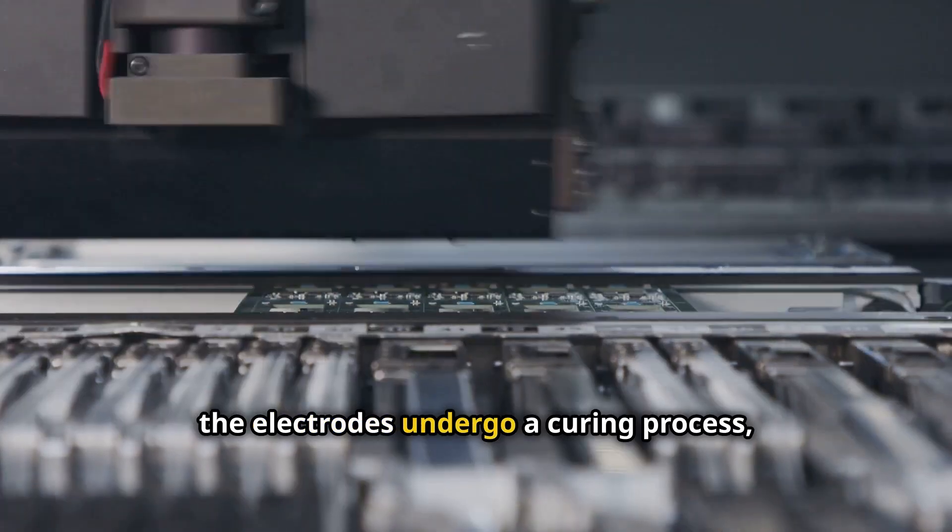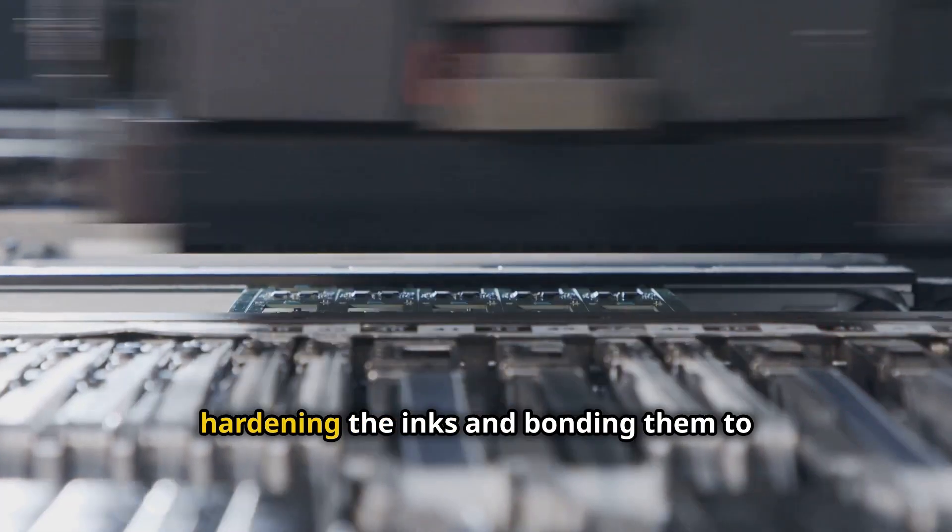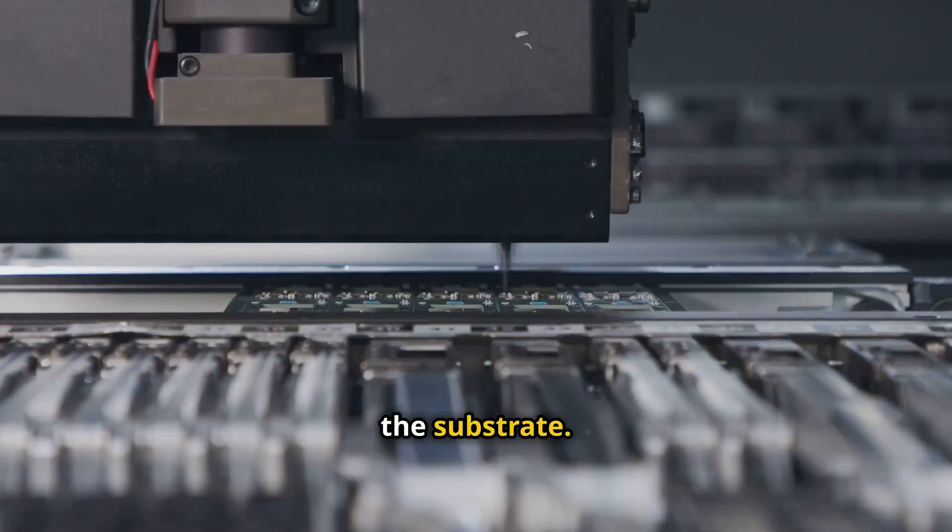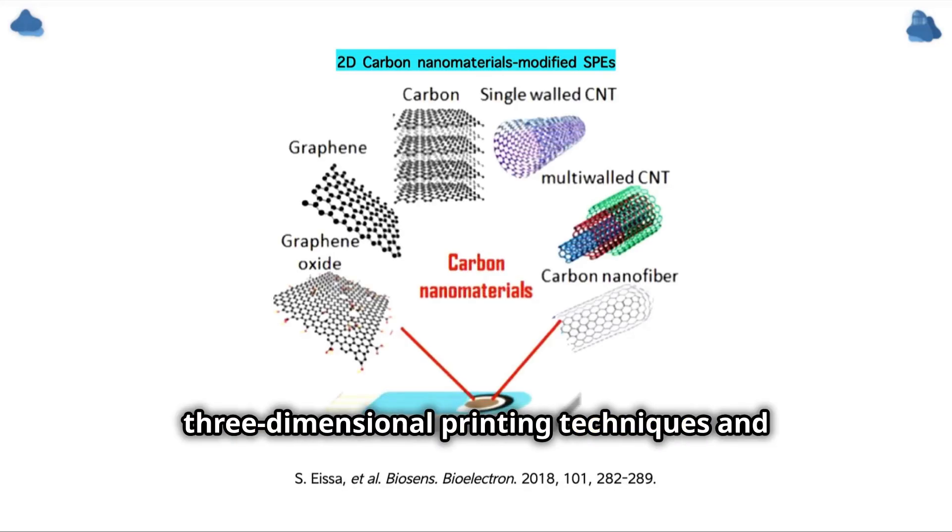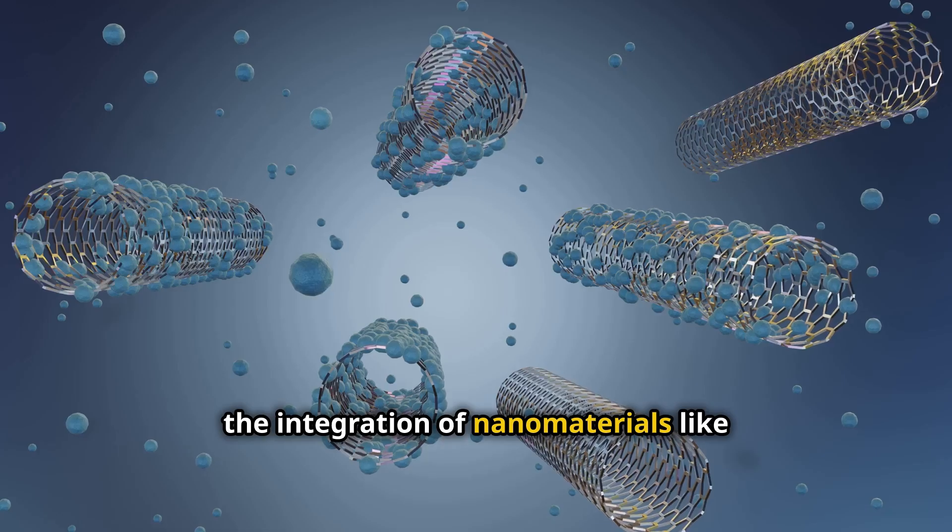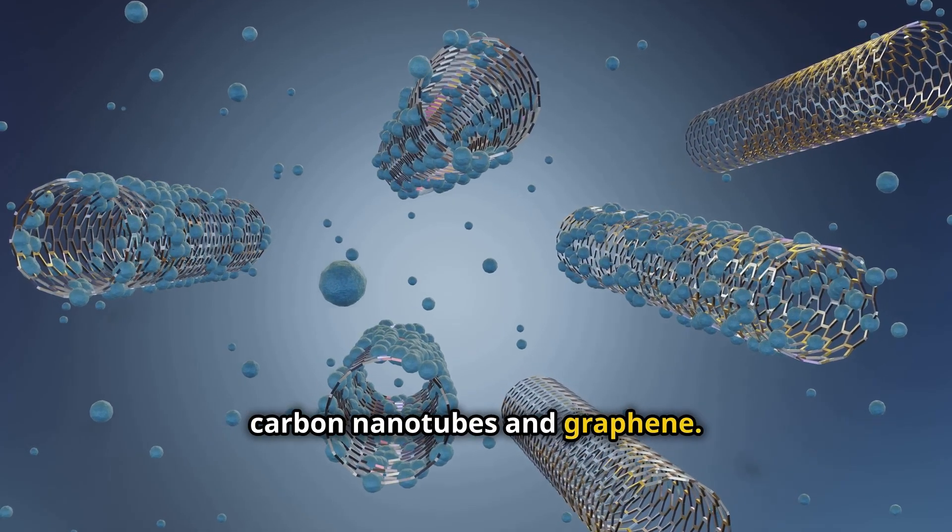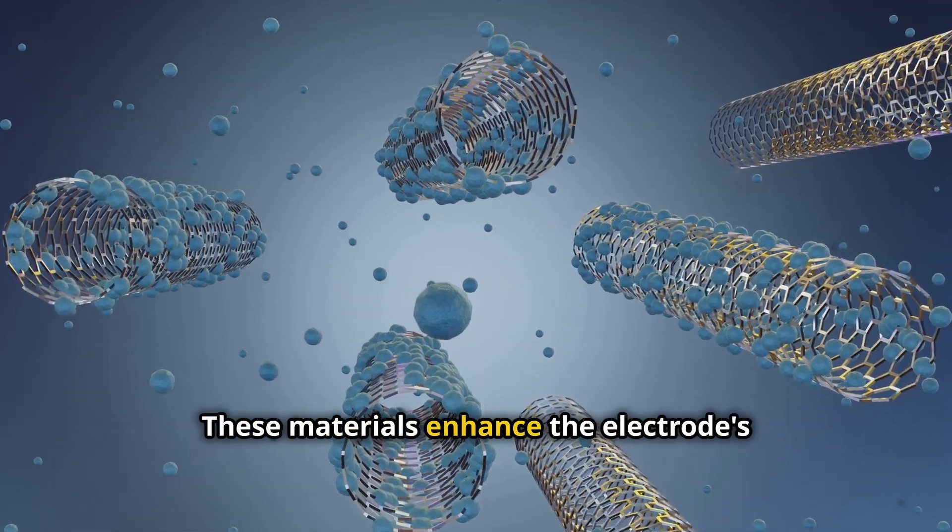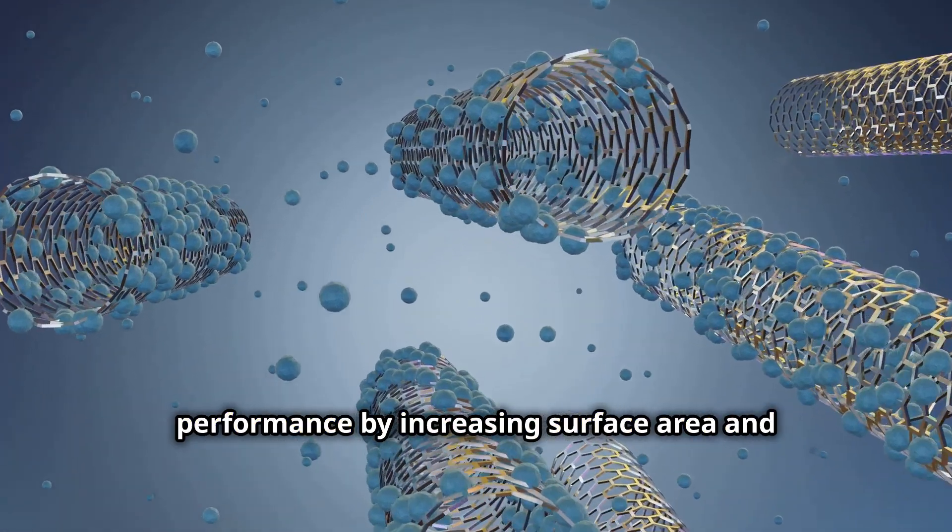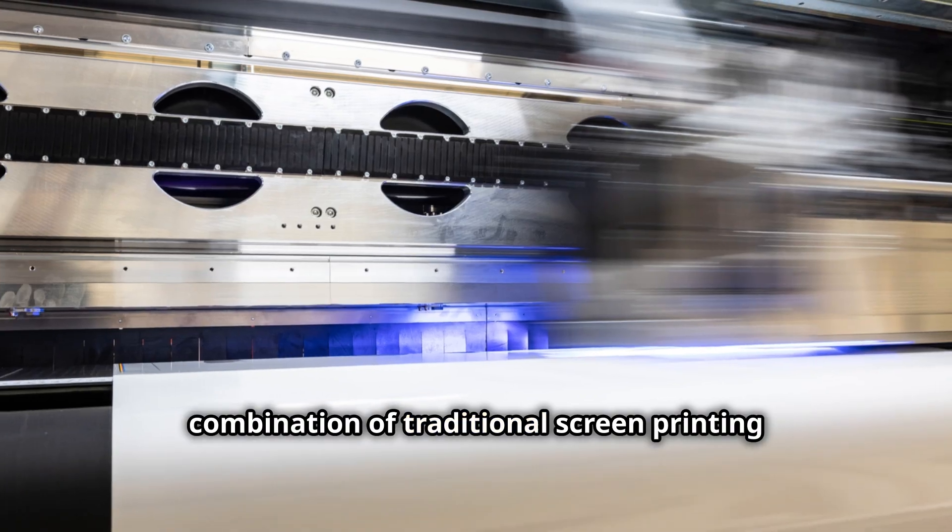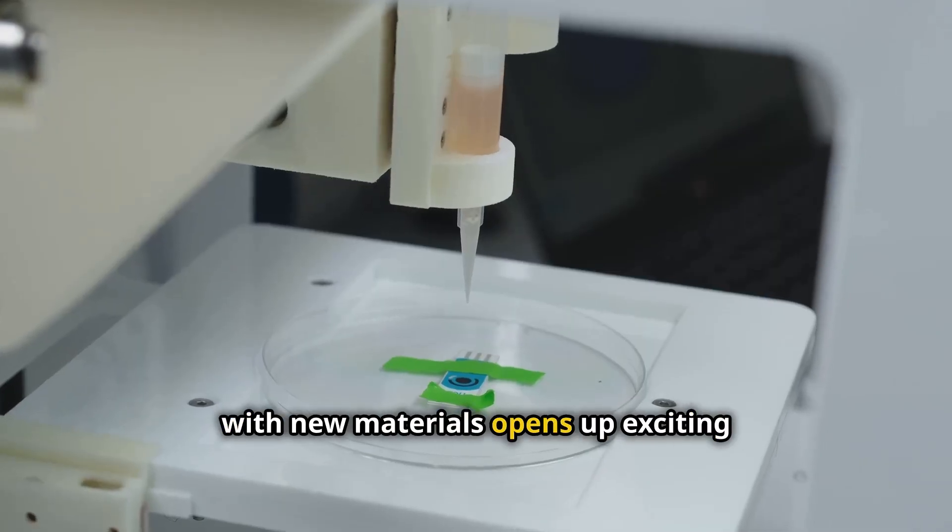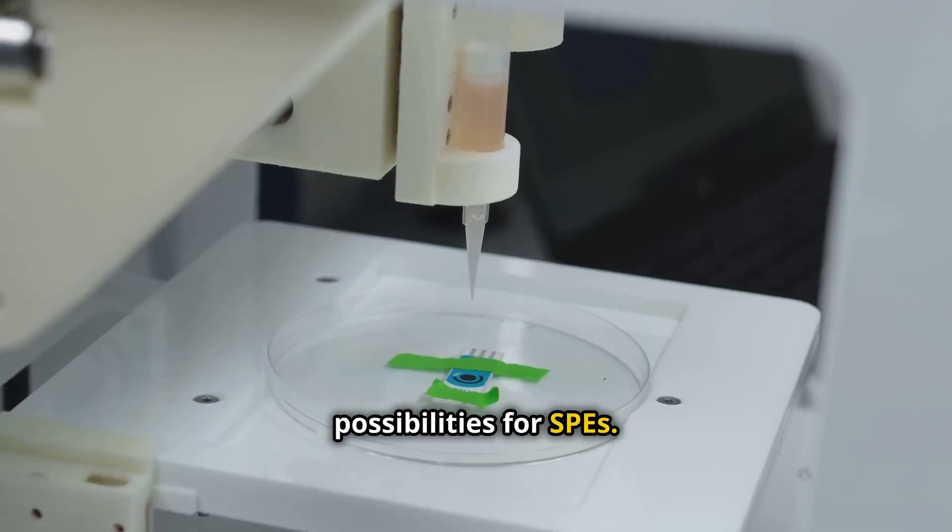After printing, the electrodes undergo a curing process, hardening the inks and bonding them to the substrate. Recent innovations include three-dimensional printing techniques and the integration of nanomaterials like carbon nanotubes and graphene. These materials enhance the electrode's performance by increasing surface area and improving electron transfer. The combination of traditional screen printing with new materials opens up exciting possibilities for SPEs.